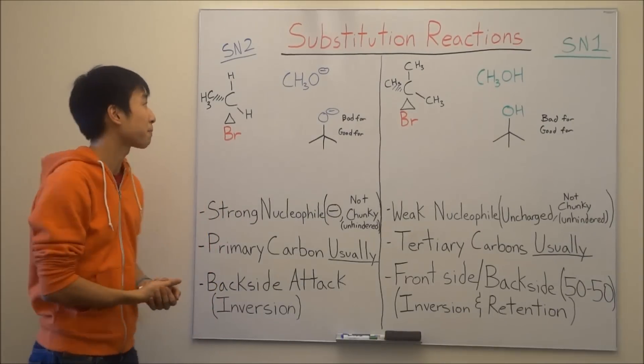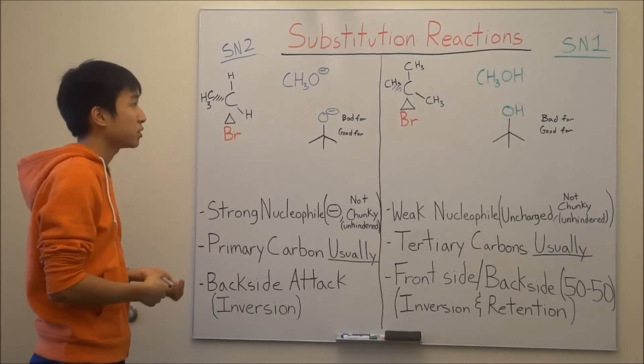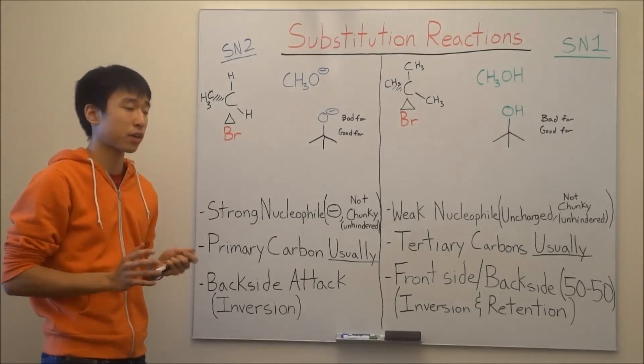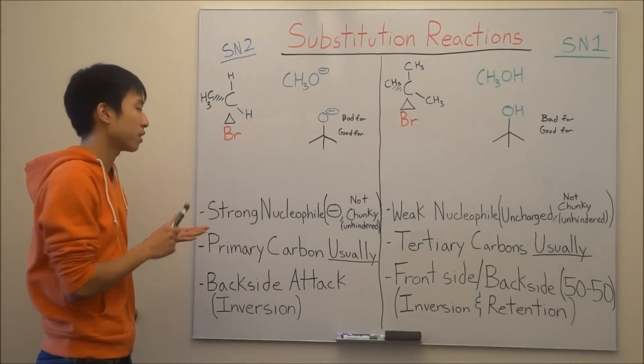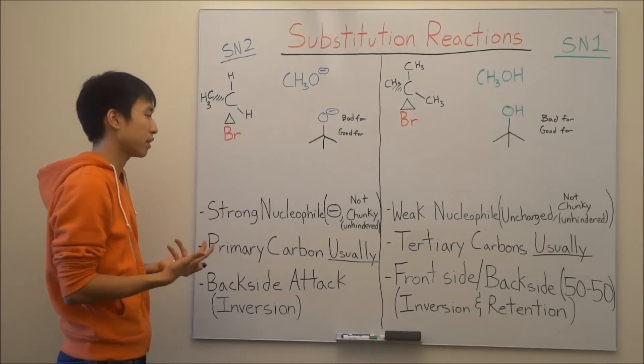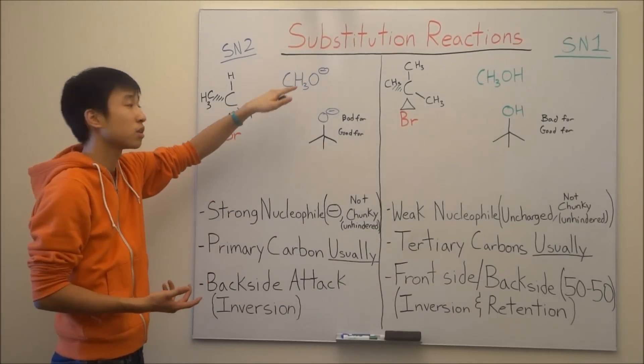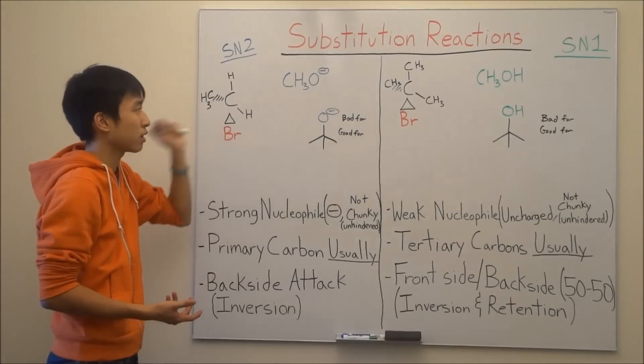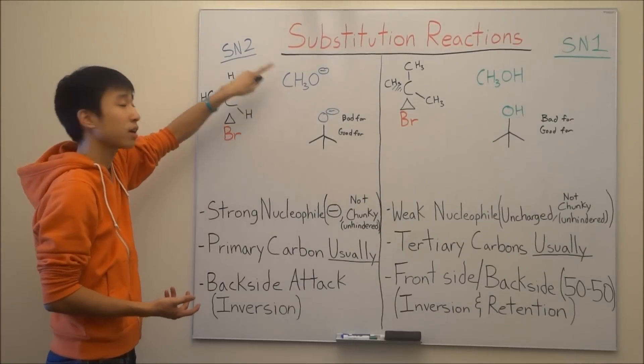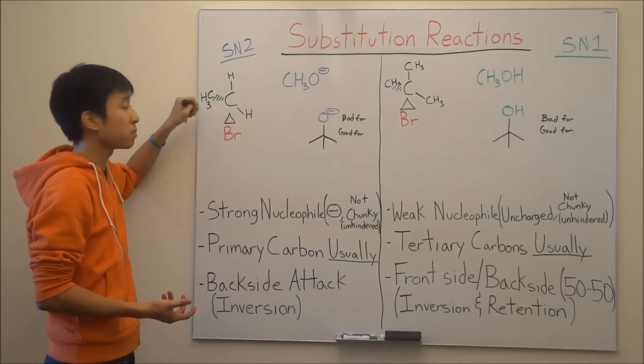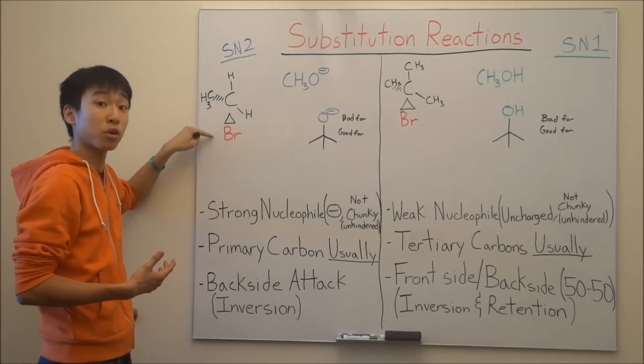Okay, so let's get started. For SN2 reactions and SN1 reactions, I think the most important key factor that you have to look for is the nucleophile. In case you guys were wondering what a nucleophile is, it's basically the molecule that's going to be doing the substitution. Your nucleophile is something that's going to attack a substrate, in this case it's this molecule here, and kick out the leaving group. For our purposes, it's the halide bromine.